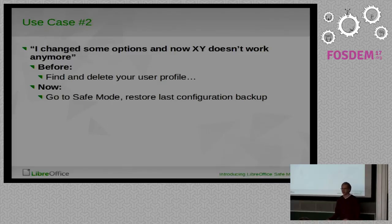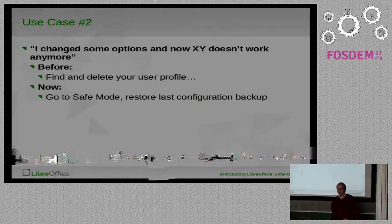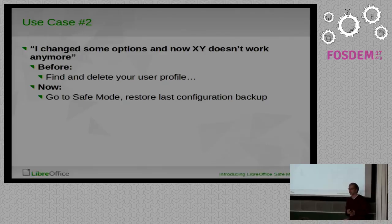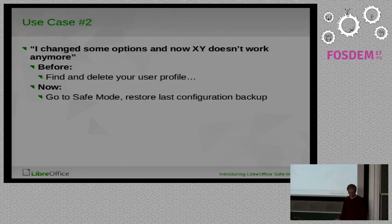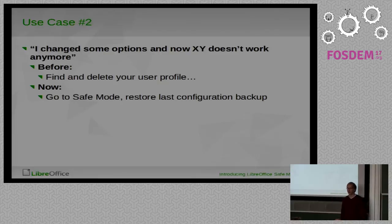Another use case: I changed option X or Y, and now LibreOffice doesn't work anymore or works differently than before. Before the solution was to delete your user profile. Now we can tell users to go to Safe Mode and restore the last configuration backup. There is a backup functionality included — it is not yet enabled by default in 5.3, but you can enable it by setting some INI options. Hopefully it will be enabled for the next release. It's essentially an auto-save for configuration. Backups are created when you change something, and you can configure what will be included.